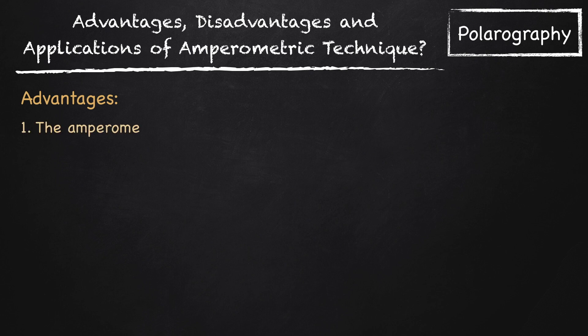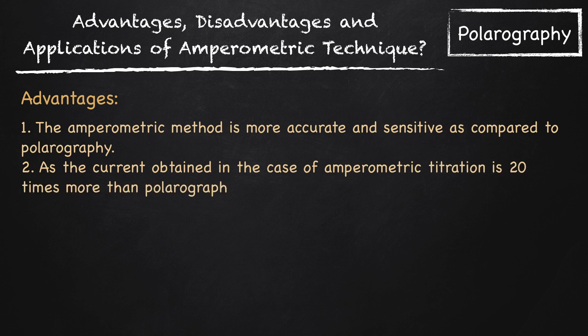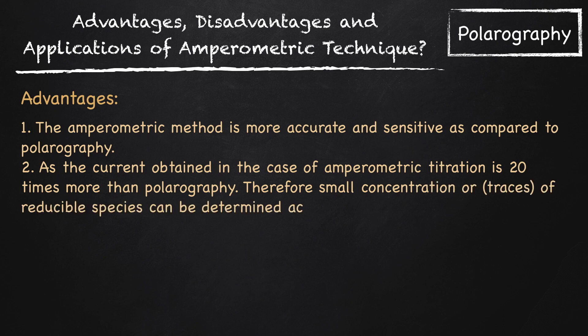The amperometric method is more accurate and sensitive as compared to polarography. As the current obtained in the case of amperometric titration is 20 times more than the polarography, therefore, small concentration or traces of reducible species can be determined accurately.